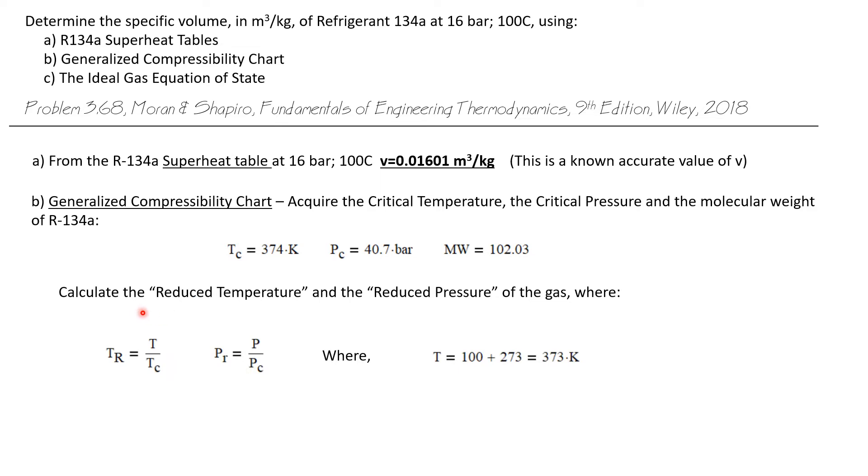Once we have those, we can calculate what's called the reduced temperature and the reduced pressure. The reduced temperature at this particular state is just the temperature of the state divided by the critical temperature. And the reduced pressure at this state is the pressure divided by the critical pressure. And we always have to work with absolute values of temperature and pressure.